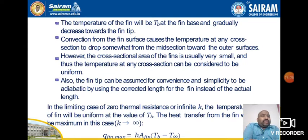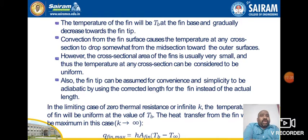The temperature of the fin is TB at the fin base and gradually decreases towards the fin tip. Convection from the fin surface causes the temperature at any cross-section to drop somewhat from the mid-section towards the outer surfaces. However, since the cross-sectional area of the fin is usually very small, the temperature at any cross-section can be considered uniform. The fin tip can also be assumed adiabatic by using the corrected length instead of the actual length.